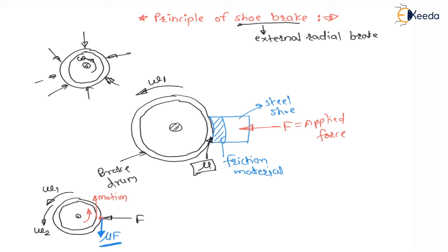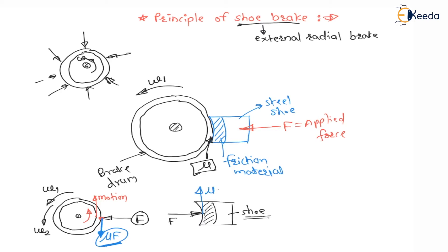Looking at the steel shoe and friction material — the shoe and the brake drum are in contact with each other. Therefore there will be an action-reaction pair. As per Newton's third law, for every action there is an equal and opposite reaction on the other component. So on the shoe, the normal force acts equal and opposite, and for the frictional force mu·F downward on the drum, there is mu·F in the upward direction on the shoe.